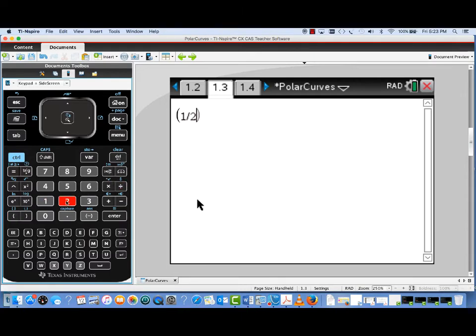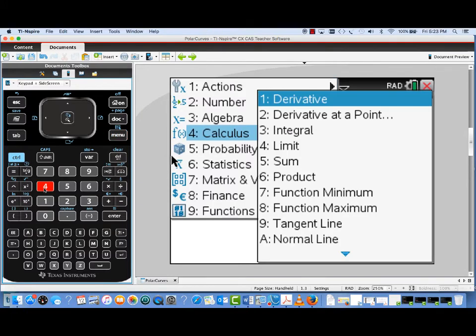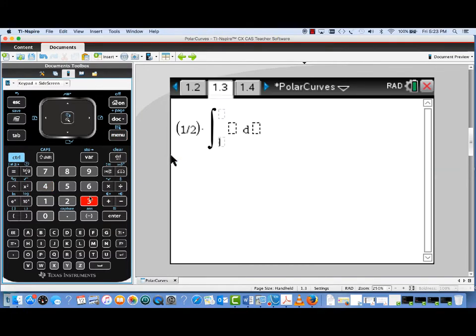Now the formula for the area enclosed by a polar curve is 1 half the integral of the range of Theta of the square of the polar curve function. So that means we're going to take 1 half of the integral from 0 to Pi over 2.